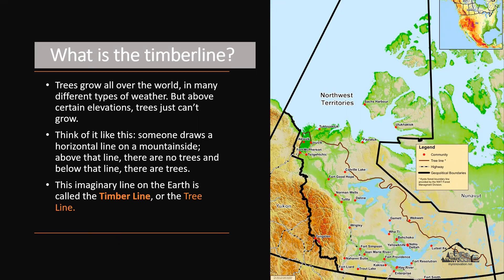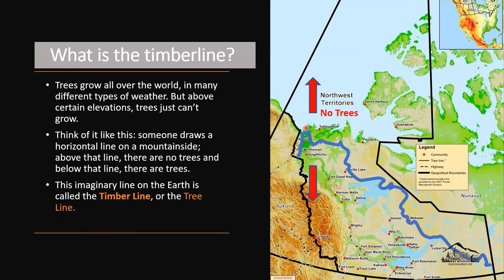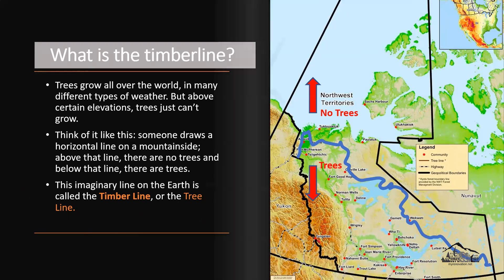Think of it like this: someone draws a horizontal line on the mountains, like this line right here. Above this line, no trees will grow. Below this line, trees will grow. This imaginary line on the earth is called the timber line or tree line.